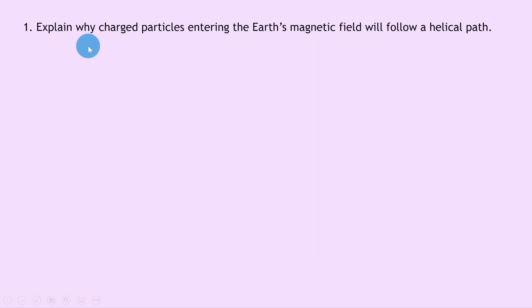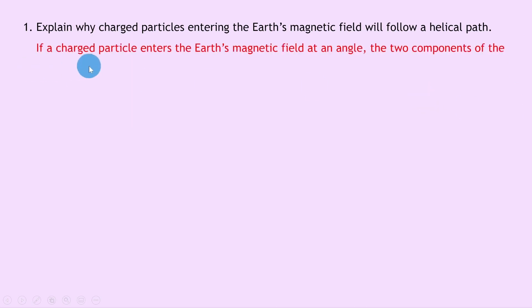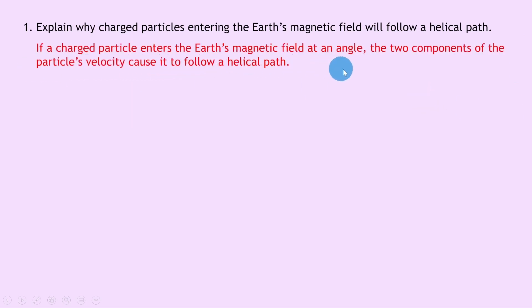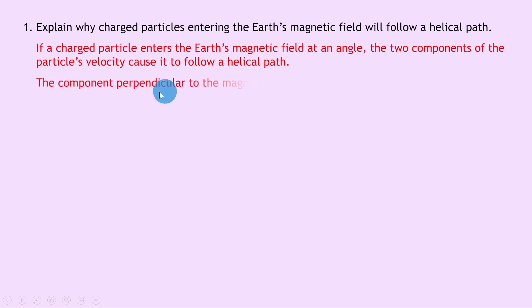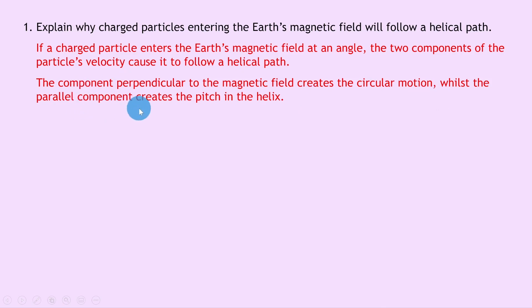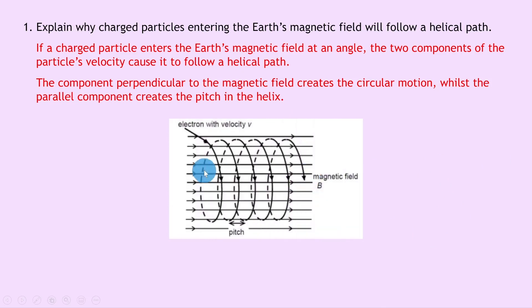Question one says to explain why charged particles entering Earth's magnetic field will follow a helical path. Straight from the theory, remember that if a charged particle enters the Earth's magnetic field at an angle, the two components of the particle's velocity cause it to follow a helical path. The component perpendicular to the magnetic field creates circular motion — this is usually termed v sine theta.